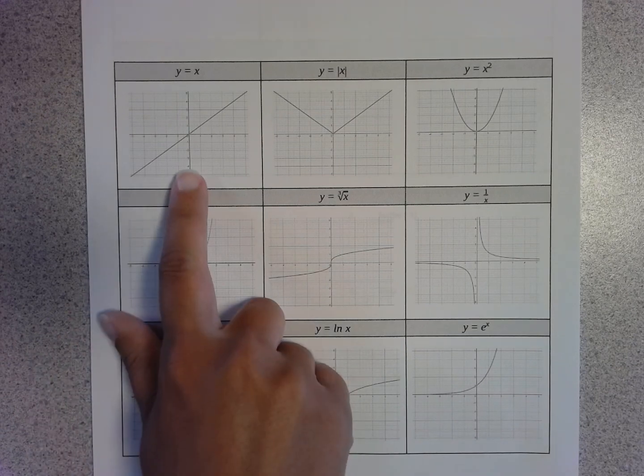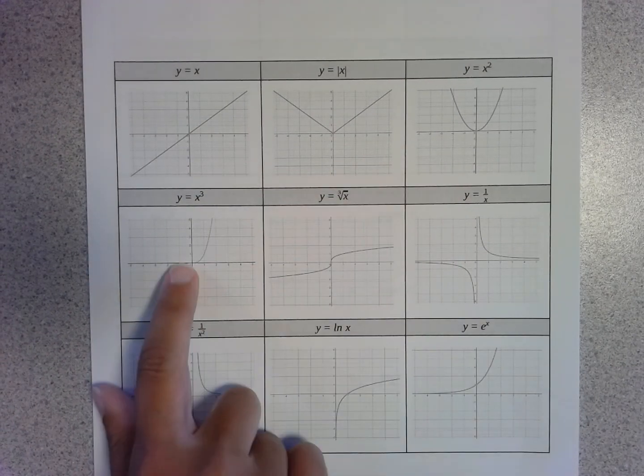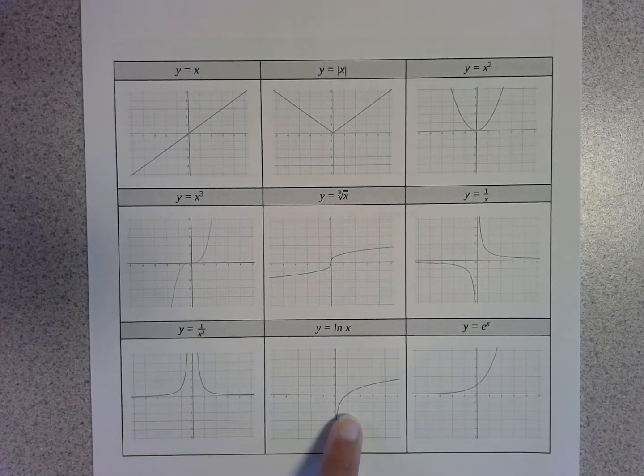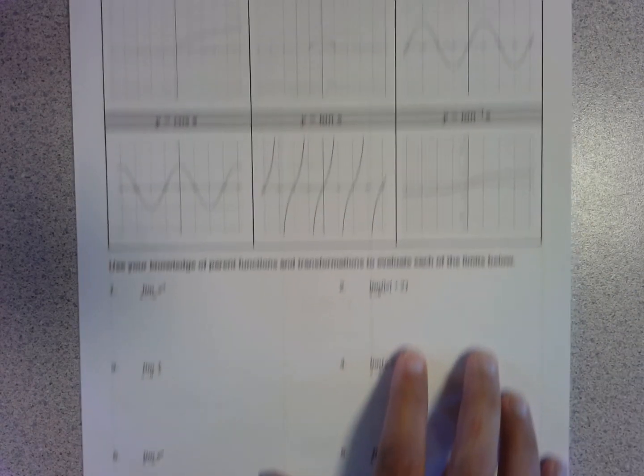So we've got the graph of y equals x, the absolute value of x, x squared, x cubed, a cubed root, 1 over x, 1 over x squared, the natural log function, e to the x. And then we've got some other graphs here.